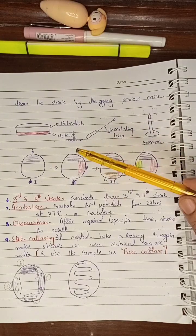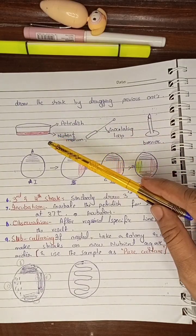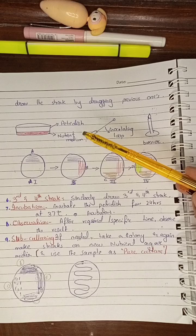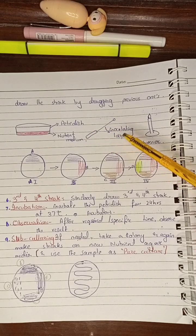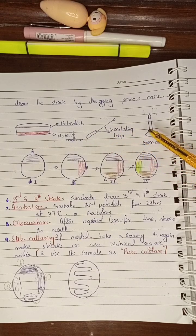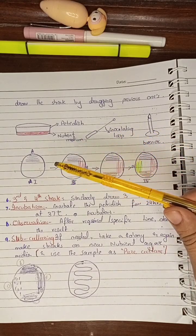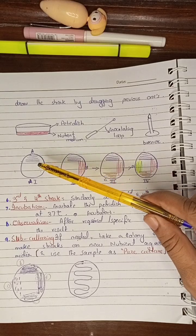In this method, prepare the nutrient medium and pour it in the petri dish. Allow it to solidify, then take the inoculating loop and make it red hot. After cooling for 3 to 5 seconds, make a streak in this pattern.